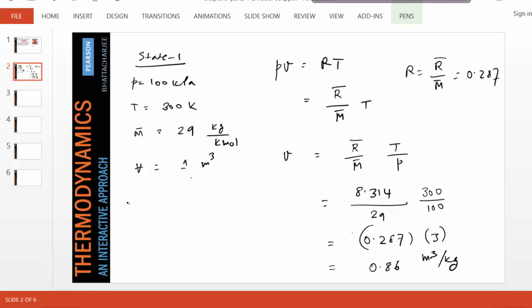So therefore, the mass of the system is what? Density times volume, and density is inverse over specific volume. 1 over 0.86, which is 1.162 kg. So we are done with the first part of the problem.